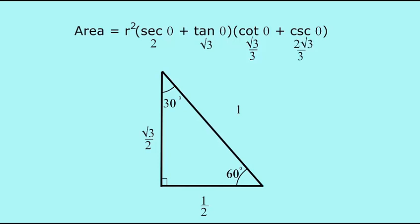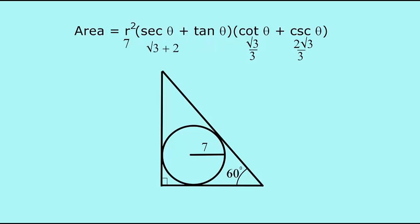Now that we've got our trigonometric ratios, let's put our incircle back in. That allows us to replace r with 7. We'll add secant and tangent to get √3 + 2, and add cotangent and cosecant to get √3. We then multiply (√3 + 2) times √3, which gives us 3 + 2√3.